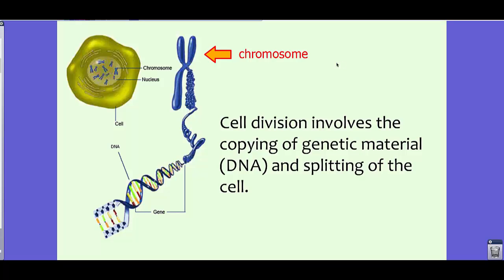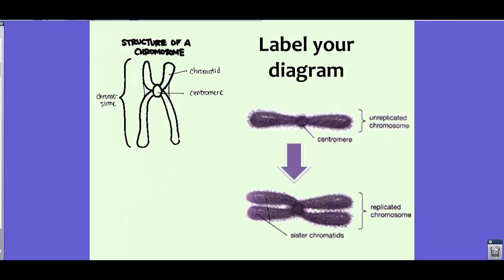Before we talk about mitosis, let's talk about the chromosomes themselves and label them. Cell division involves the copying of genetic material and the splitting of the cell — that's the basis of mitosis. Chromosomes are a really important part in mitosis, between the splitting of the cell and the replication of the DNA. In your notes, you have a diagram of a chromosome to label. The structure of a chromosome looks sort of like an X. In the center is a centromere, which is almost like glue that holds the X strands together.